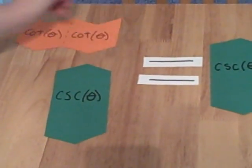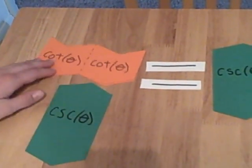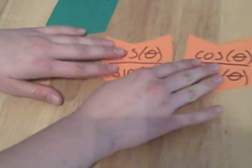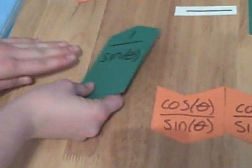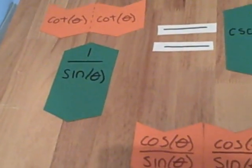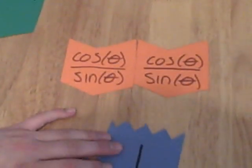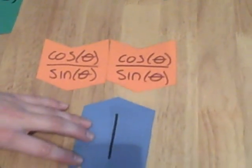If we flip over cotangent squared, we have cotangent times cotangent. So, let's bring those up. Cosecant, we remember, is 1 over sine. We are going to flip these so that those go together.